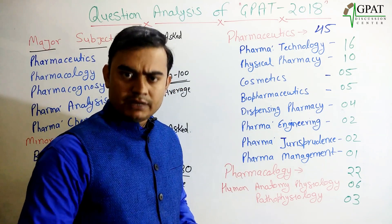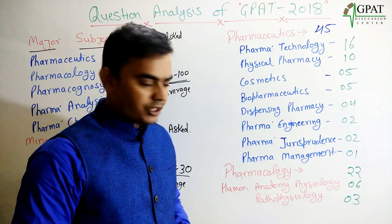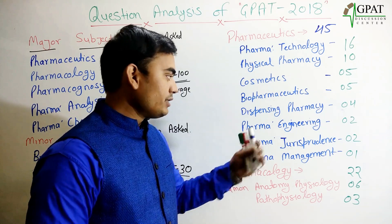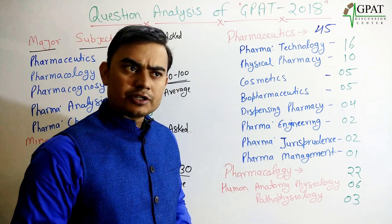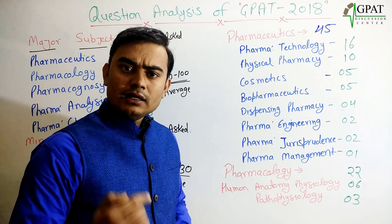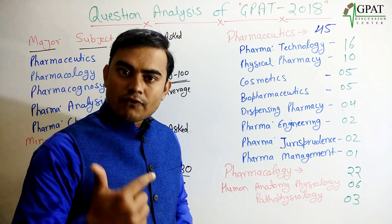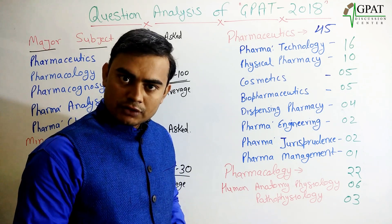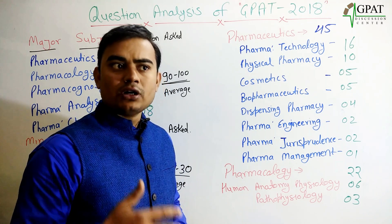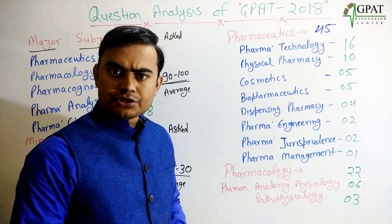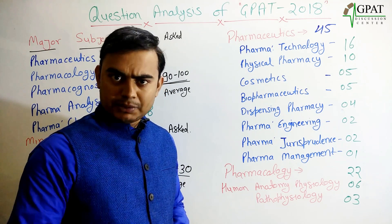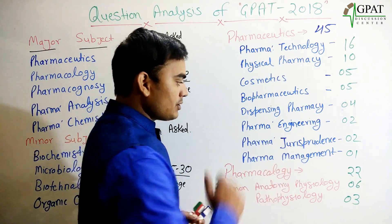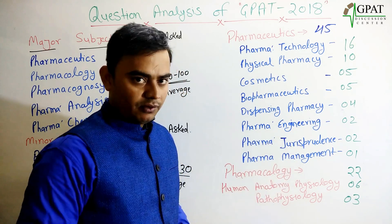Pharmaceutical engineering, commonly known as unit operations: 2 questions. Jurisprudence mainly covers schedules, form numbers, composition of different advisory committees, constitutions of the PCI, and state PCI. Pharmaceutical management: 1 question.